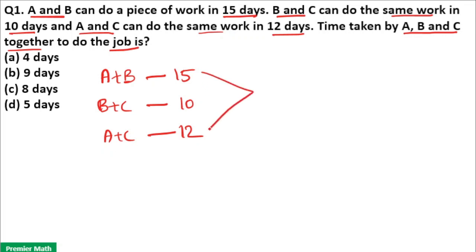So take the LCM of 10, 15 and 12. Here LCM of 15, 10 and 12 is 60. Now 15 goes 4 times in 60, 10 goes 6 times in 60, 12 goes 5 times in 60.